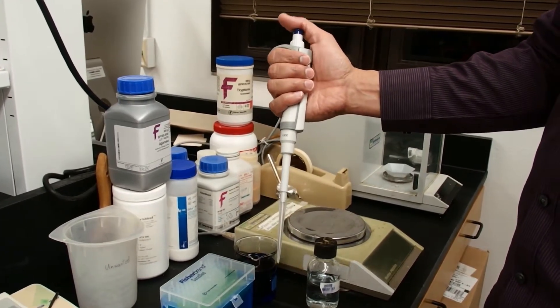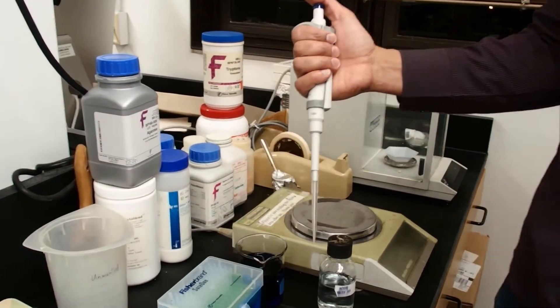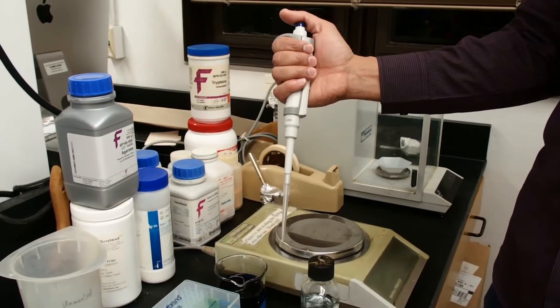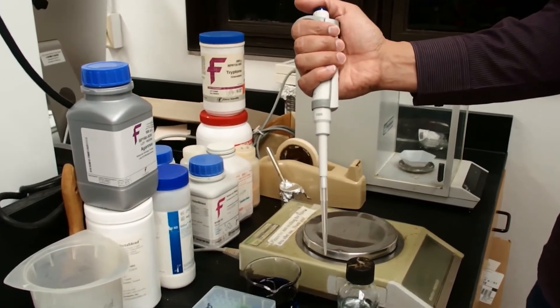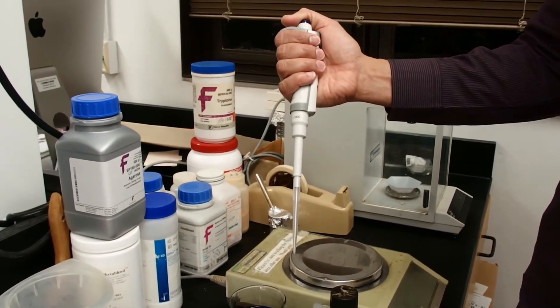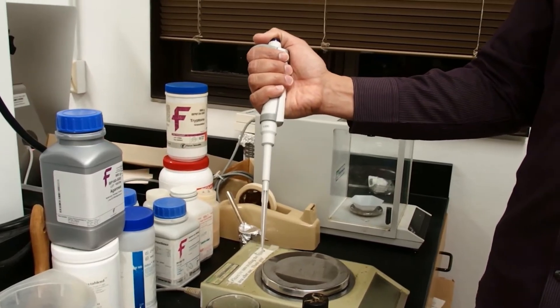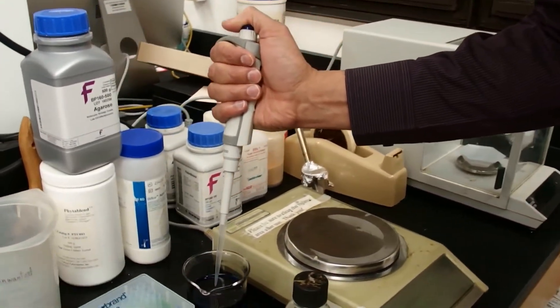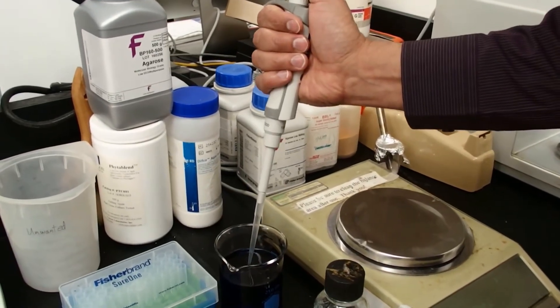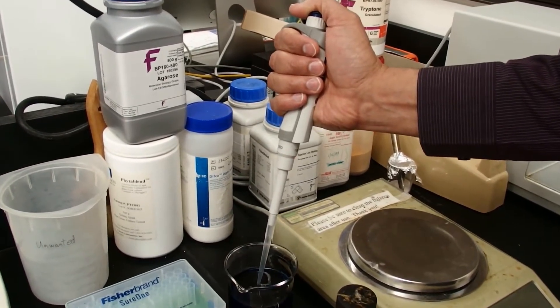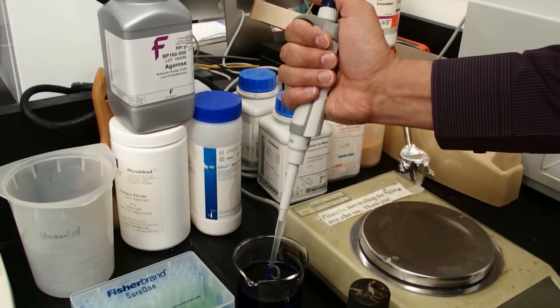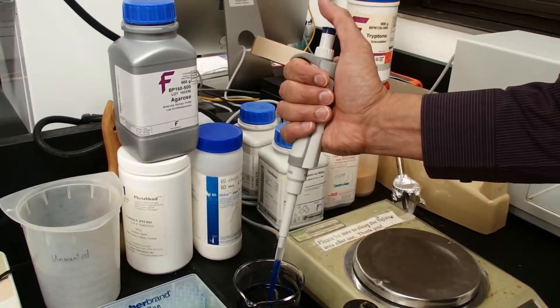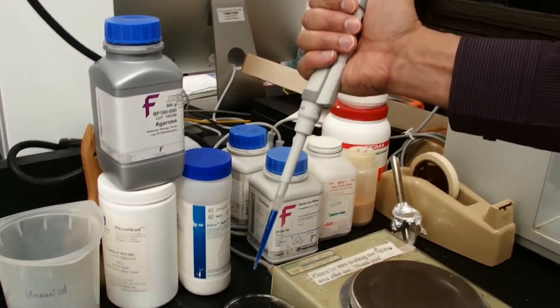I'm going to pipette 1,000 microliters of this blue colored water by pressing to the first stop in the air. It's important to do this in the air and hold. Then place it very shallow into the liquid, maybe 2 or 3 millimeters. Then release the plunger slowly. It's important to go slow to be accurate, and then take the liquid out.